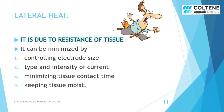Lateral heat is the heat which is caused in the surrounding area of the usage spot of electrodes, caused due to the resistance offered by the tissues. How can we minimize it? By controlling the electrode size and making it smaller, the lateral heat can be reduced. Type and intensity of current, minimizing tissue contact time — just in seconds we can move the electrodes — and keeping the tissue moist.